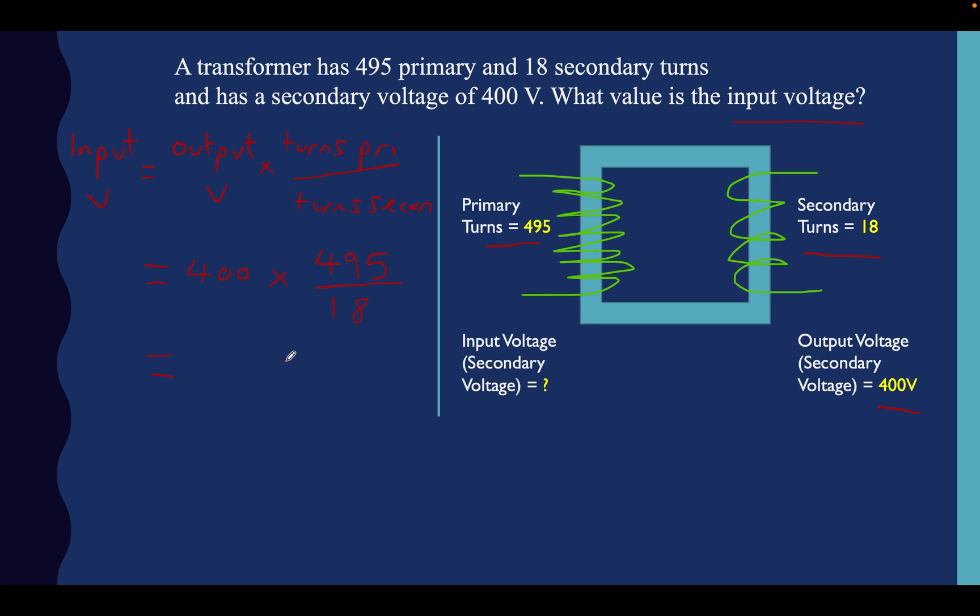And then if we do this bit first, we're going to be doing 27.5 and 400, because when you do 495 divided by 18, that gives you 27.5, which we'll talk about in a second. What's that going to give us? That's going to give us 11,000 volts as our input voltage, or we could tackle that down to 11 kilovolts. So we've done that.